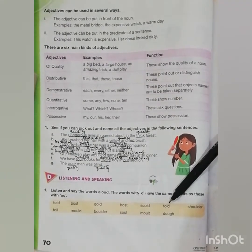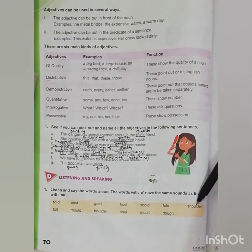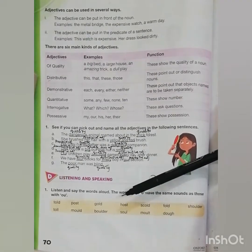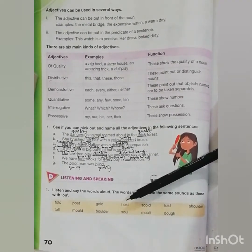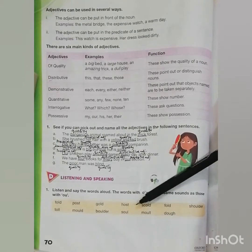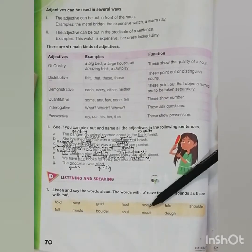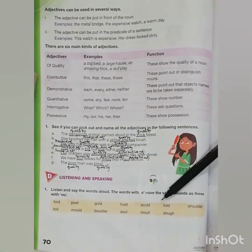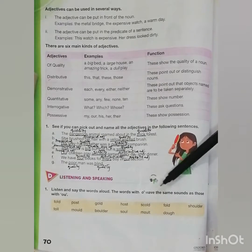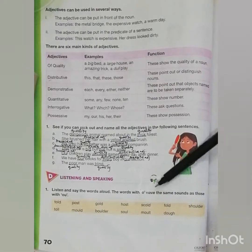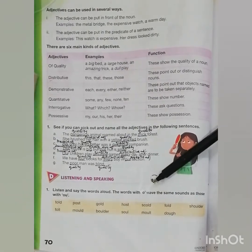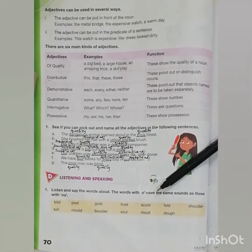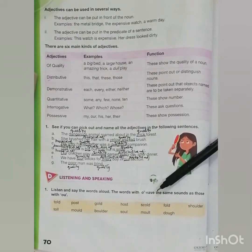Shoulder, toll, mold, boulder, soul, mold, doe. So all these words with the vowel O have the same similar sounds.